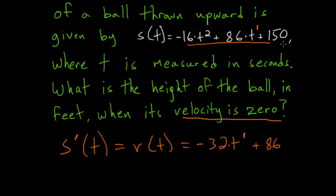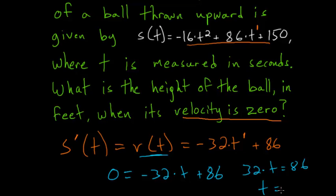We need to figure out the height of the ball when its velocity is 0, so we need to set this function equal to 0 and solve for t. 0 = -32t + 86. Adding 32t to each side, 32t = 86. Dividing each side by 32, t = 86/32, which simplifies to 43/16.